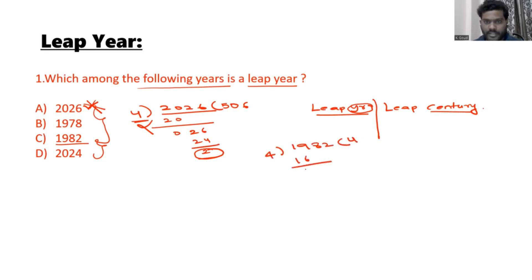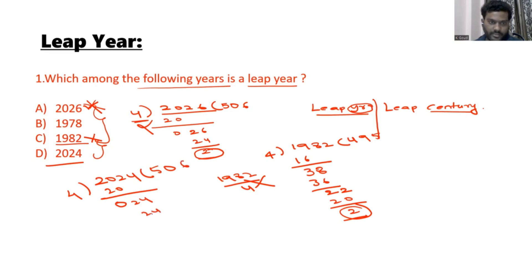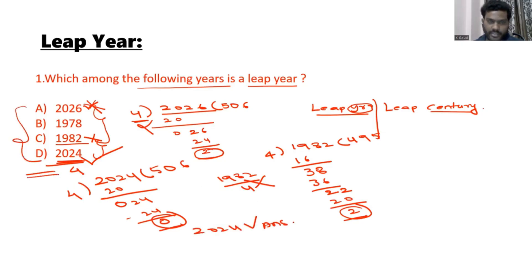Continuing with 1982 divided by 4: the remainder is 2, so 1982 is not a leap year. Now consider 2024 divided by 4: 4 times 506 is 2024, giving a remainder of 0. Since 2024 is divisible by 4, 2024 is a leap year and is the answer. This completes the first category of leap years.